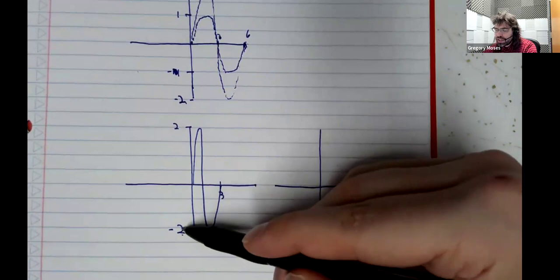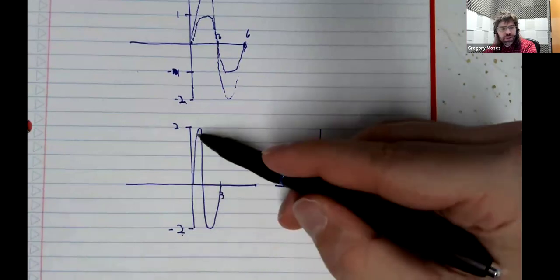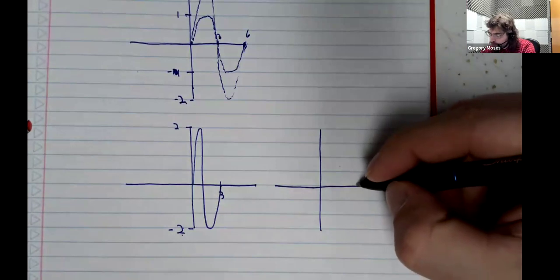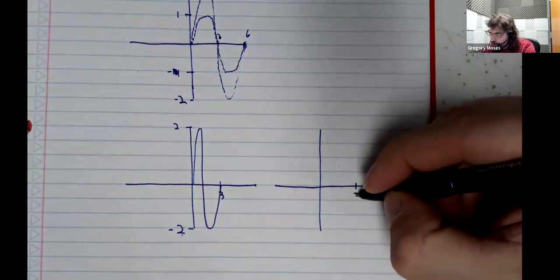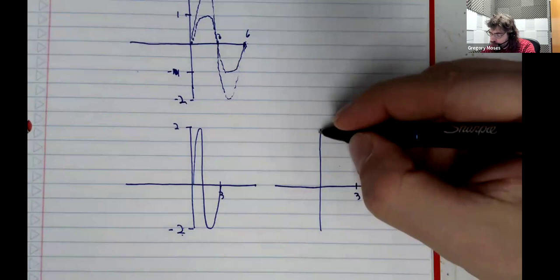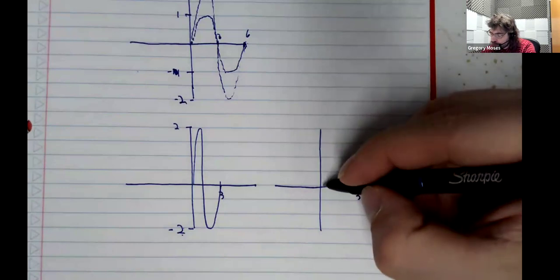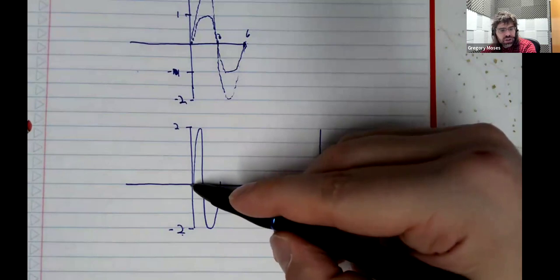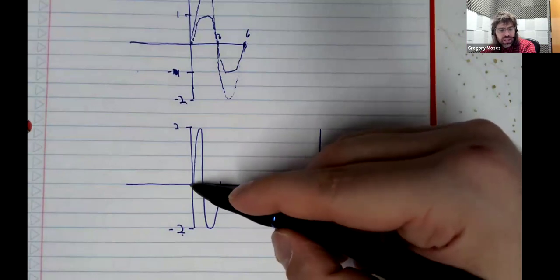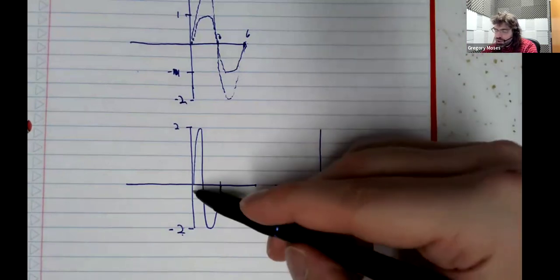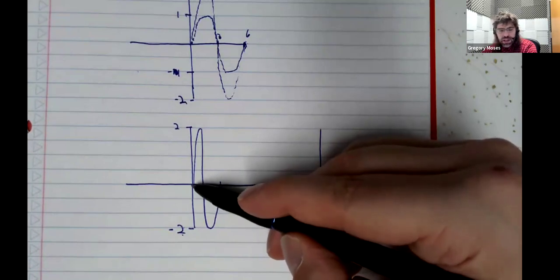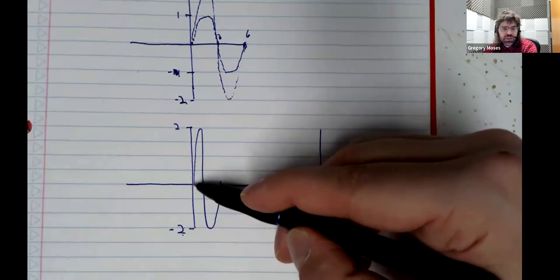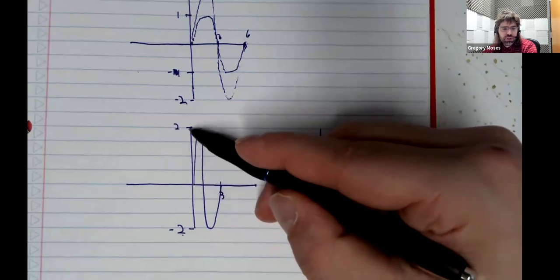Everything gets shifted up two units. So from negative two to zero, from two to four. It starts at the midpoint. So this starting value is also going to be shifted up two units from zero to two.